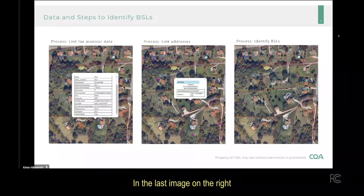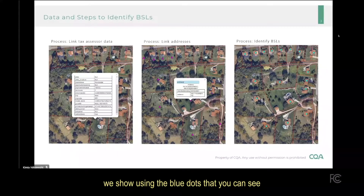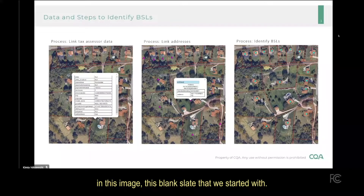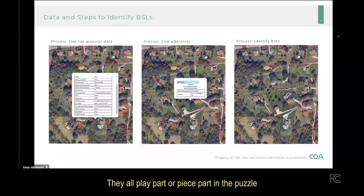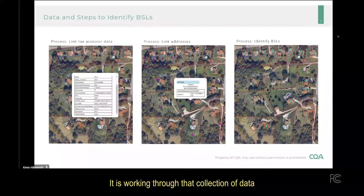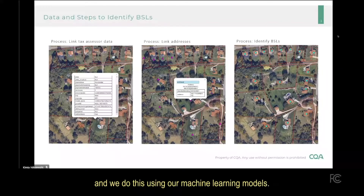In the last image on the right, we show — using the blue dots you can see — the BSLs we have identified, starting from this blank slate. It is important to note that not one source is sufficient in identifying the BSLs. They all play a part — they're piece parts in the puzzle, and each provides critical evidence. It is by working through that collection of data that we are able to identify the BSLs, and we do this using our machine learning models.